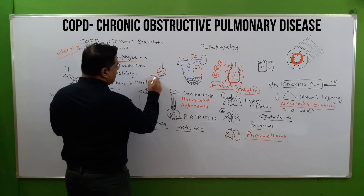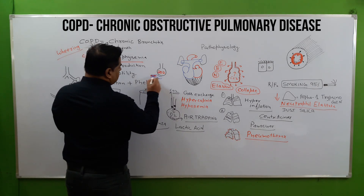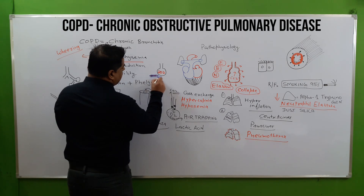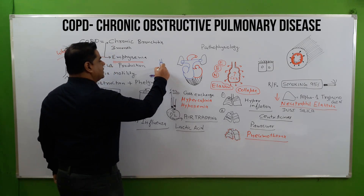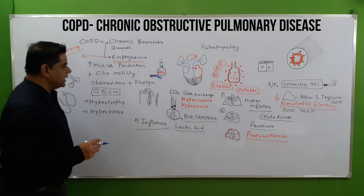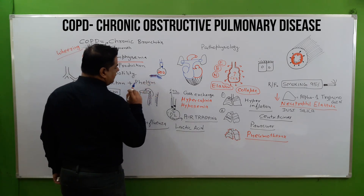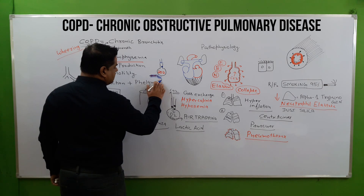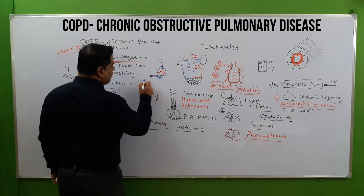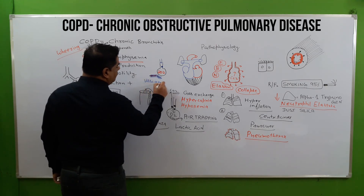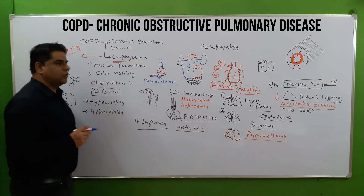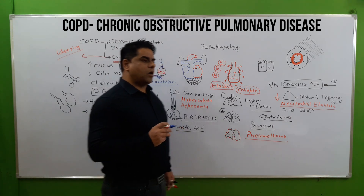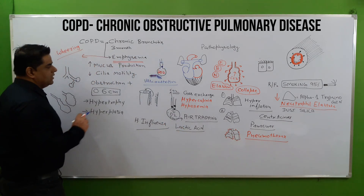There is less oxygen, less perfusion of oxygen, because oxygen is not coming due to chronic bronchitis and pocket formation. So there will be less oxygen perfusion, and the pulmonary artery branch can show vasoconstriction — this is known as hypoxemic vasoconstriction.